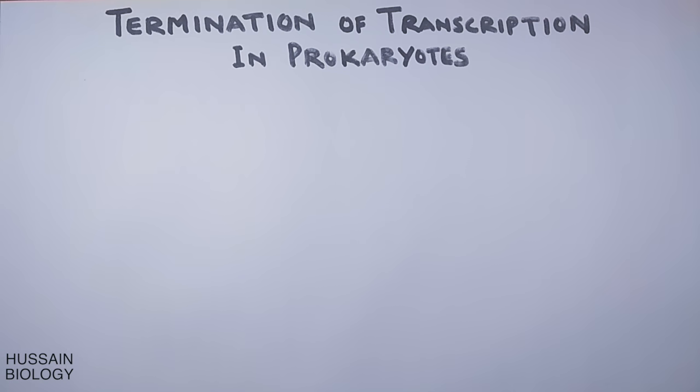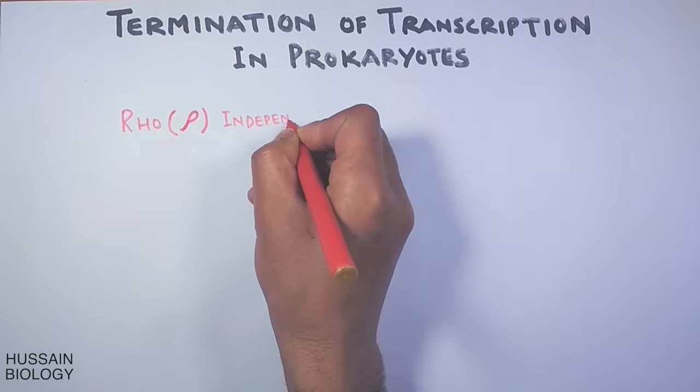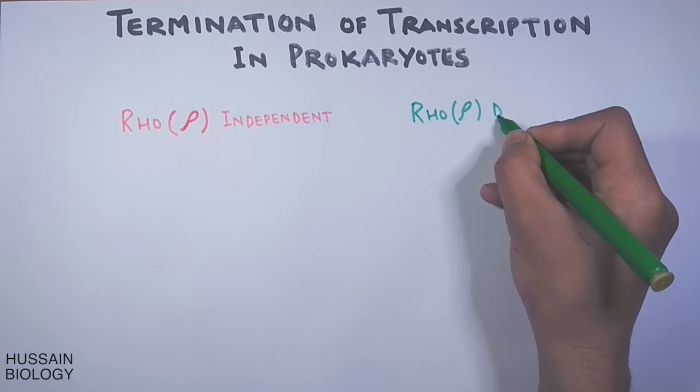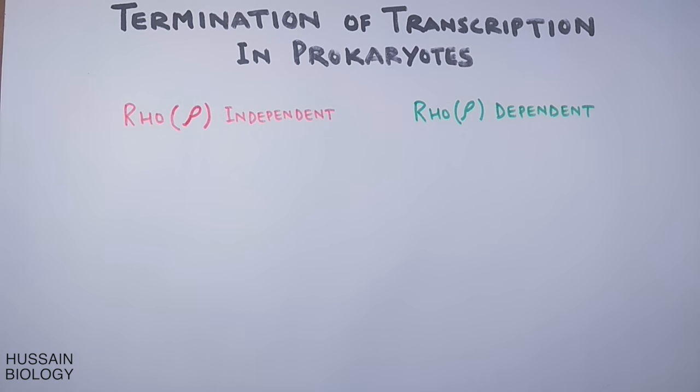The termination of transcription in E. coli or prokaryotes proceeds in two ways: either rho-independent termination or rho-dependent termination. Rho here is a protein. In one case, there is no involvement of rho protein, while in the other case there is involvement of rho protein.